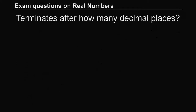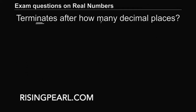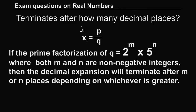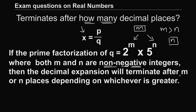Now let's move on to the second part. Now that we know which expansions terminate, the question is: after how many decimal places? If q is expressed as 2^m times 5^n, the number of decimal places depends on the values of m and n. Whichever value is greater — m or n — the expansion will terminate after that many places.